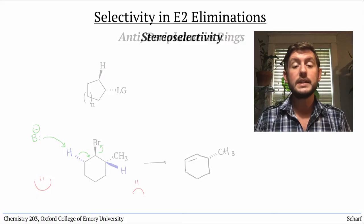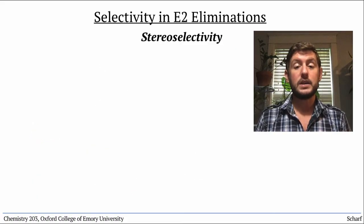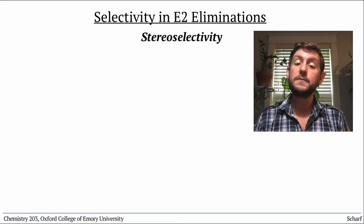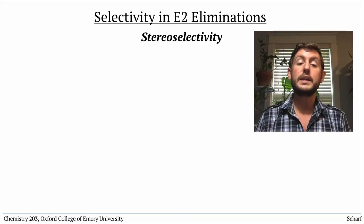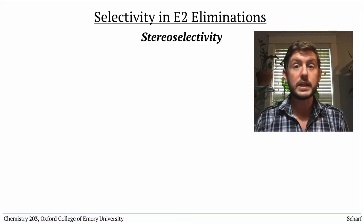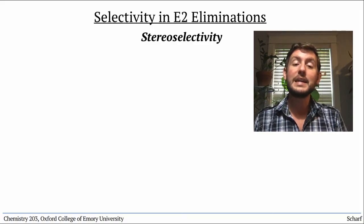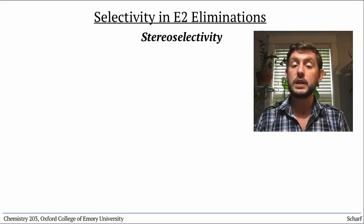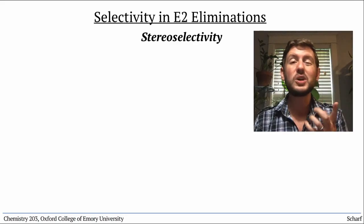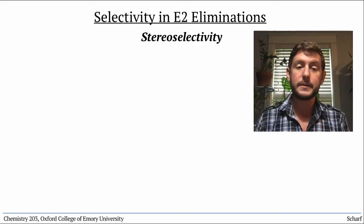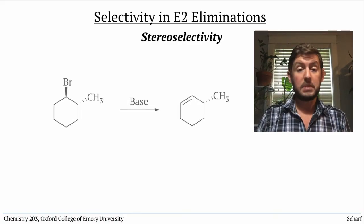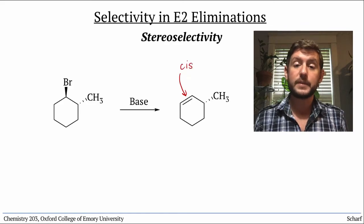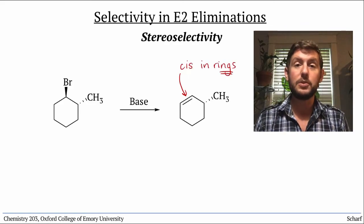We also need to consider stereochemistry — the configuration of the double bond that is formed. In most cases, as I mentioned, the E or trans double bond is formed preferentially, but only when there's a choice. If the forming double bond is in a ring, it must be cis, because trans double bonds are extremely unstable in a ring.